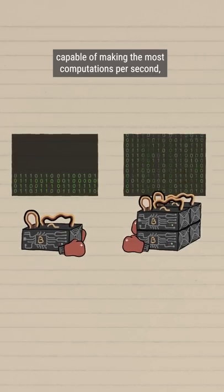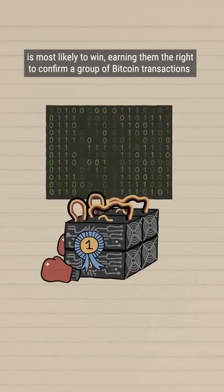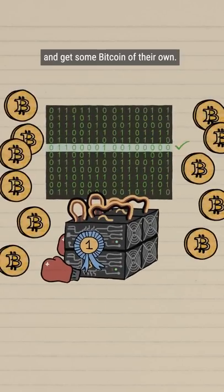The most powerful computer capable of making the most computations per second is most likely to win, earning them the right to confirm a group of Bitcoin transactions and get some Bitcoin of their own.